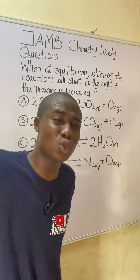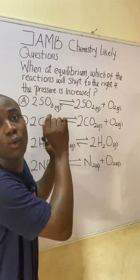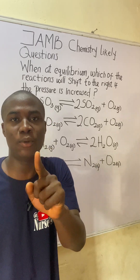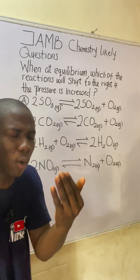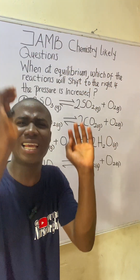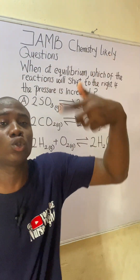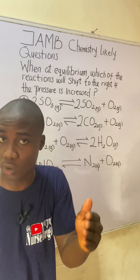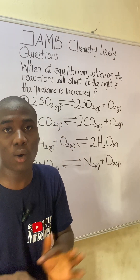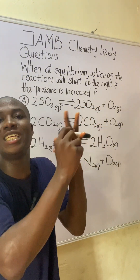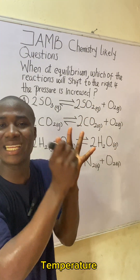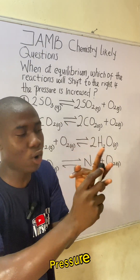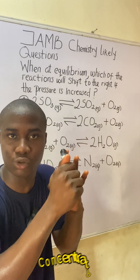I can also call them 'systems' because of the topic we are in, which is chemical equilibrium. Remember, Le Chatelier's Principle states that if an external constraint is imposed on a system at equilibrium — this system can also be called a reaction. So the question we ask ourselves: what are these external constraints? There are three. The first is temperature, another is pressure, and the last is concentration.